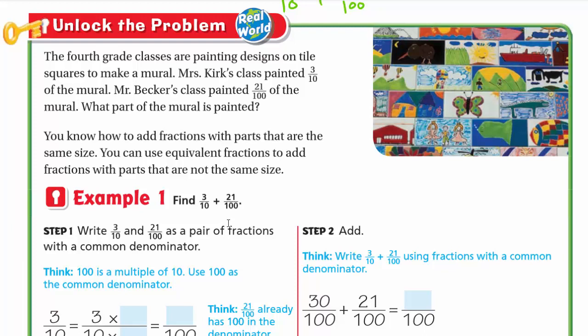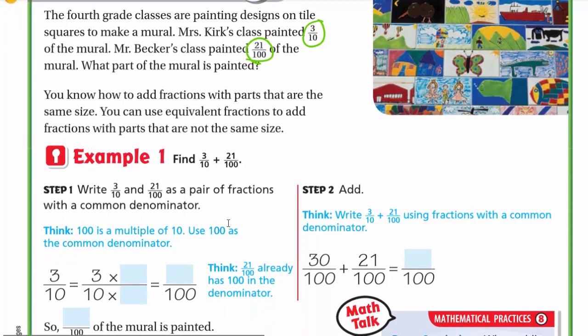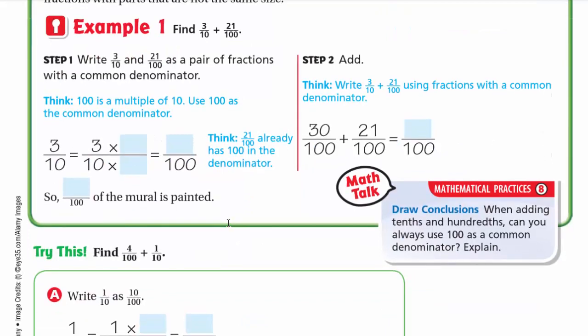Let's unlock the problem. The fourth grade classes are painting designs on tile squares to make a mural. Mrs. Kick's class painted 3 tenths of the mural. Mr. Picker's class painted 21 hundredths of the mural. What part of the mural is painted? We need to add 3 tenths and 21 hundredths, but the problem is they don't have common denominators.